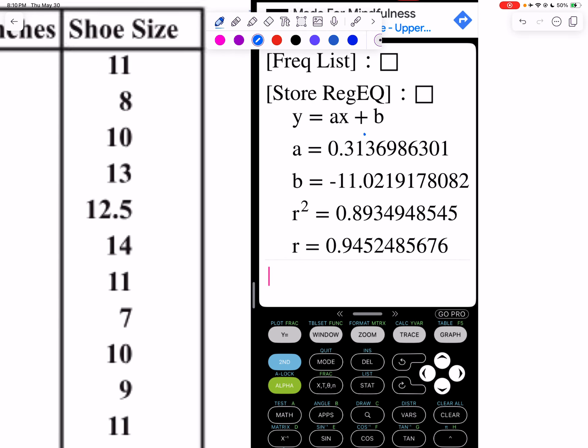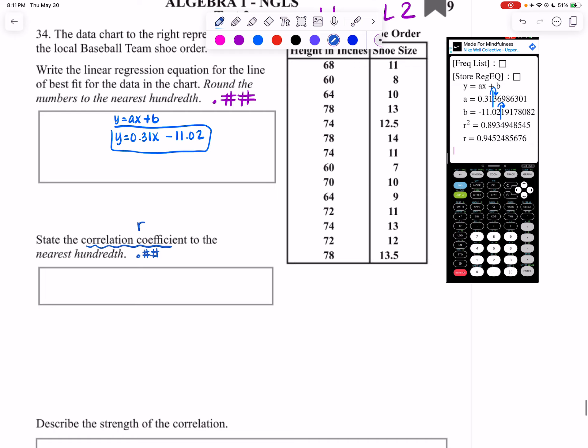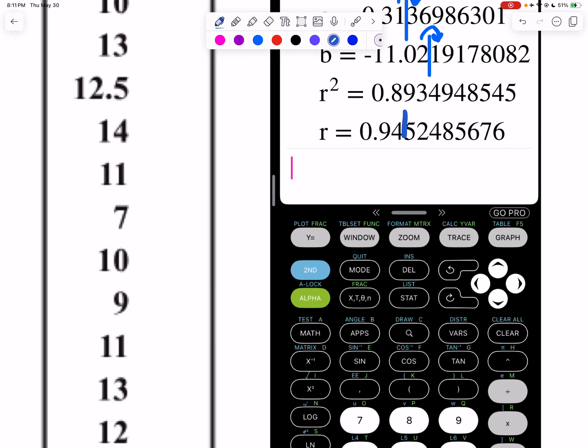Now, this part says state the correlation coefficient to the nearest hundredth. So that's going to be point number number again. And your correlation coefficient is your r value. So if I look here, my r value is going to be 0.945. But if I look, that's a five. So that four is going to turn into a five. So I'm going to have r equals 0.95.